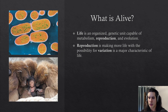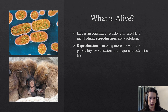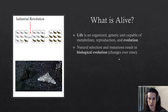Another characteristic of living things is reproduction — the capacity to replicate itself. We have an example of Pseudomonas fluorescens, which is actually undergoing a process called binary fission in order to replicate the entire organism. Other organisms may partake in sexual reproduction. Reproduction is making more life with a possibility for variation, and variation is going to be a major characteristic of life.